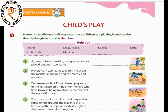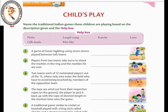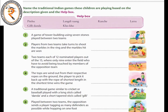Next is Child's Play — name the traditional Indian games. These children are playing based on the descriptions given in the help box. The games are: Gillidanda, Kokko, Langditang, Kanchi, Lattu, and Pithu. A game of tower building using seven stones played between two teams is called Pithu. See the pictures and find the remaining answers with the help of the help box — all these games are played by you children!